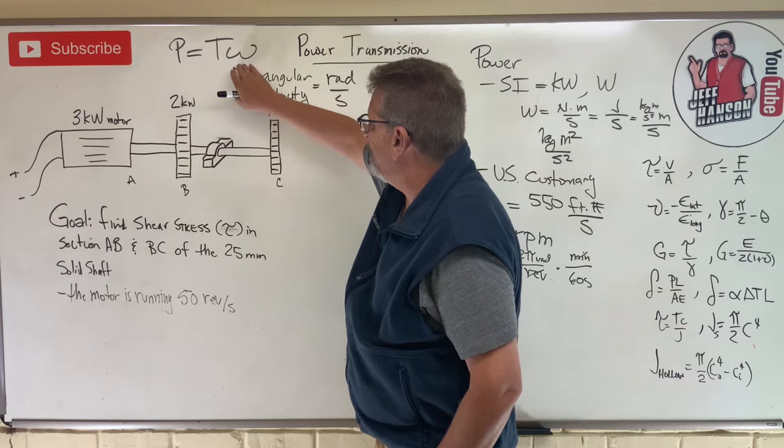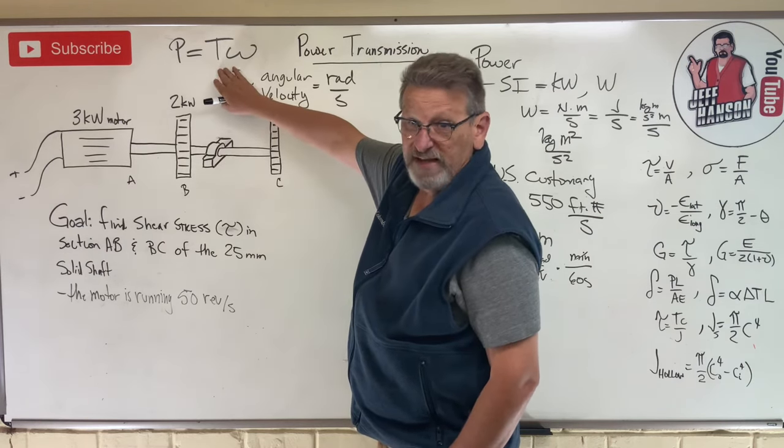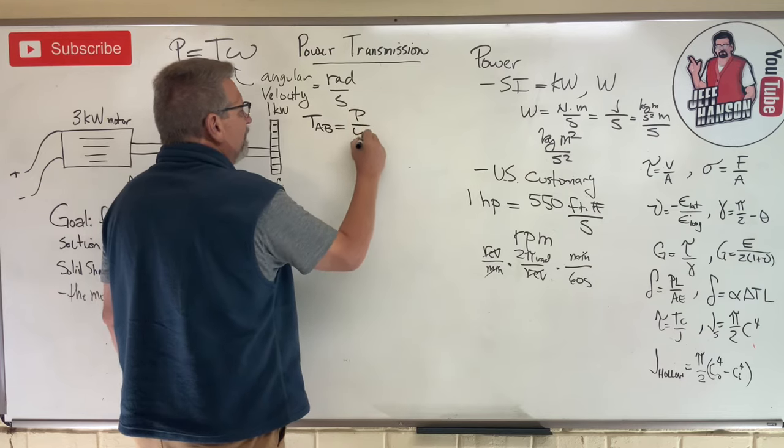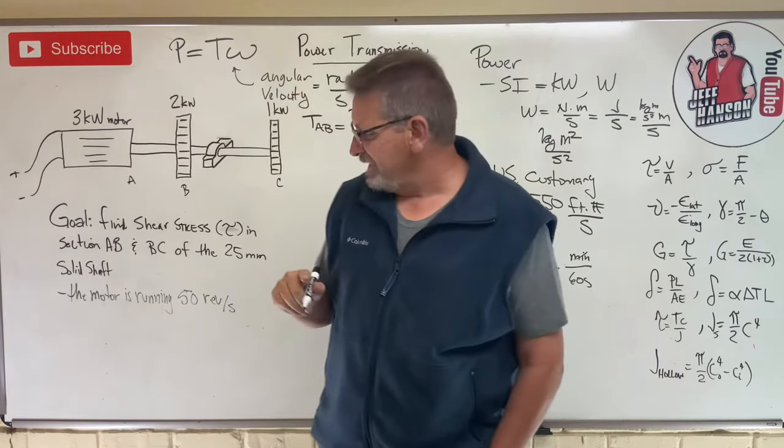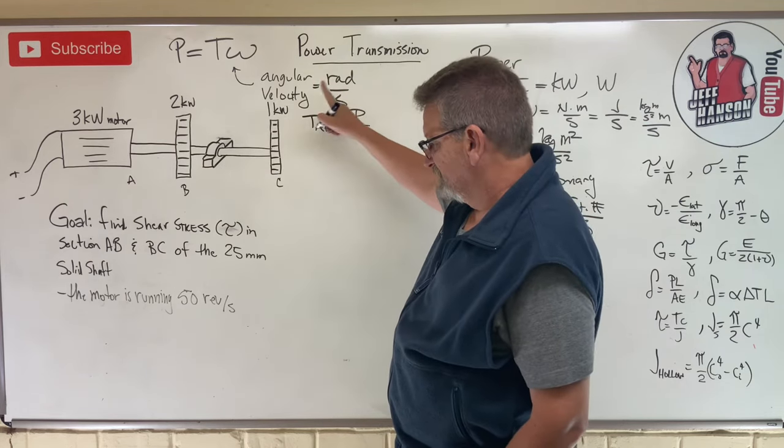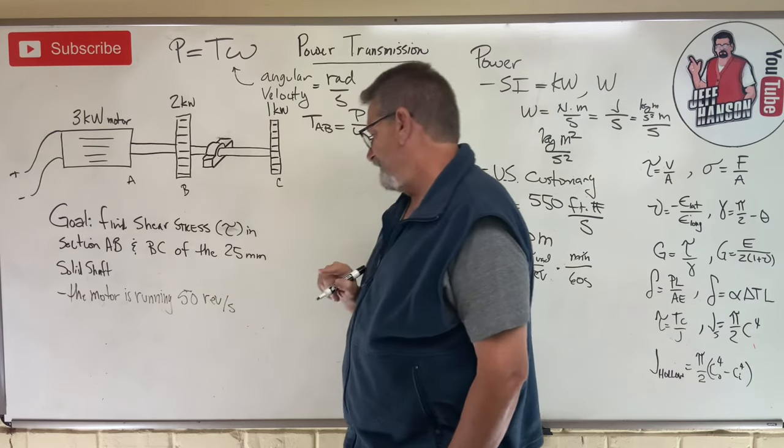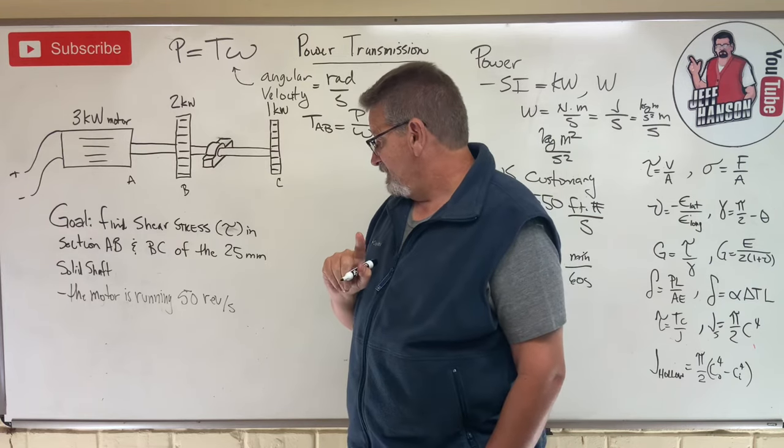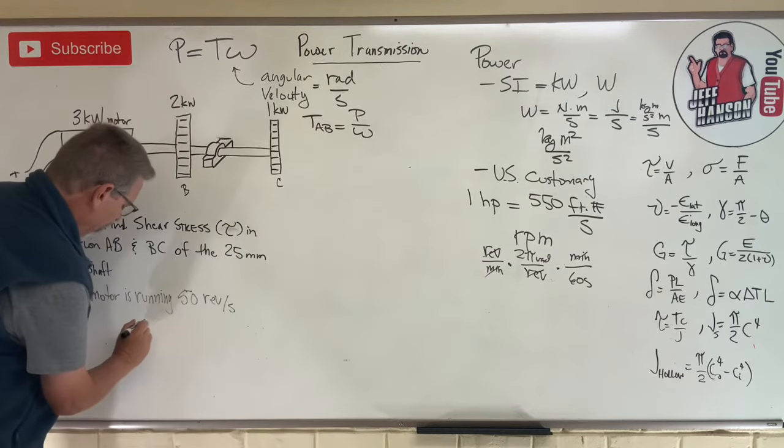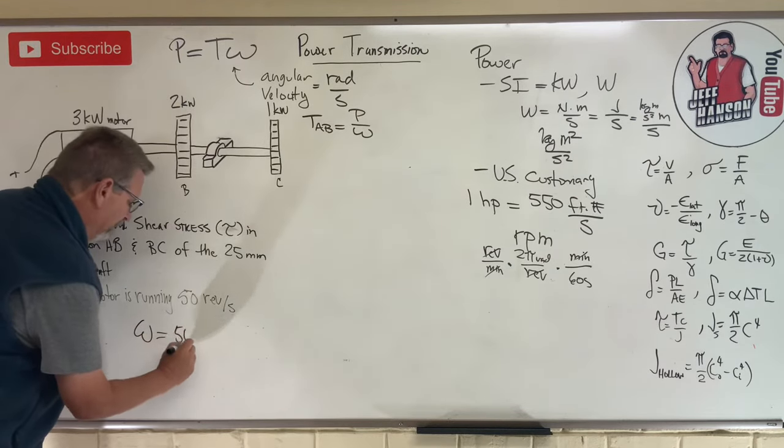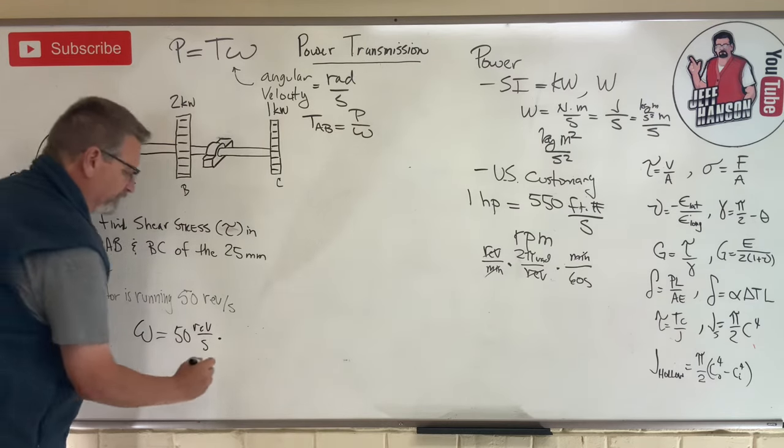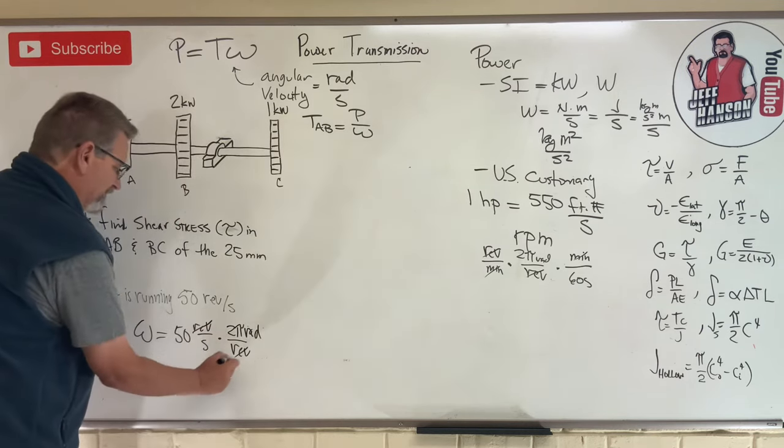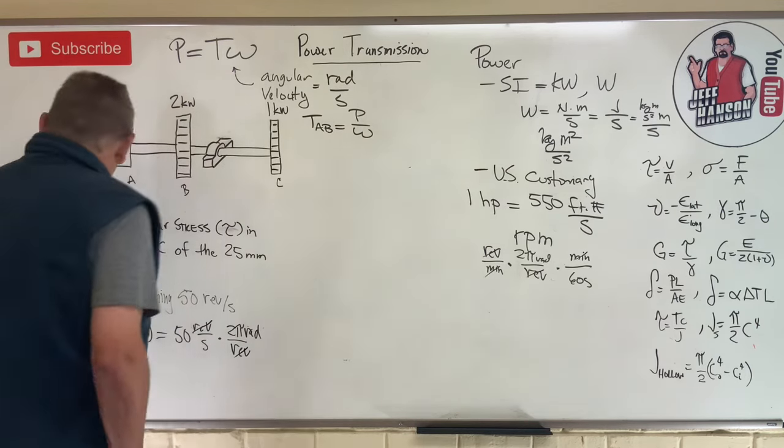Let's see if we can get this. If P equals T times omega, then T must equal P divided by omega. So T_AB must be P divided by omega. Now what is omega? Radians per second is what I need. But what does it tell me? The motor is running 50 revs per second. That's close to radians per second, at least it's not revolutions per minute. We got to convert that. So omega equals 50 revs per second, but I'm going to get rid of revolutions - divided by 2 pi radians. My revolutions cancel out, leaving me with radians per second.